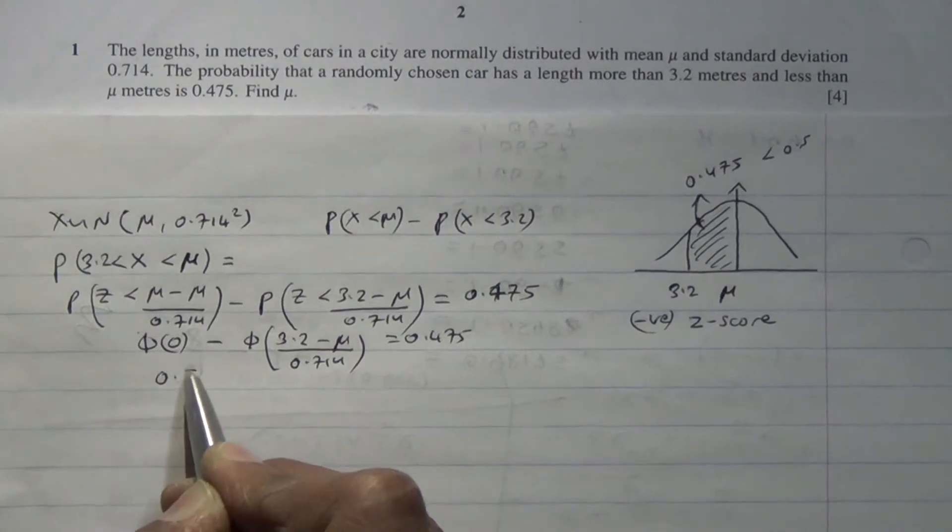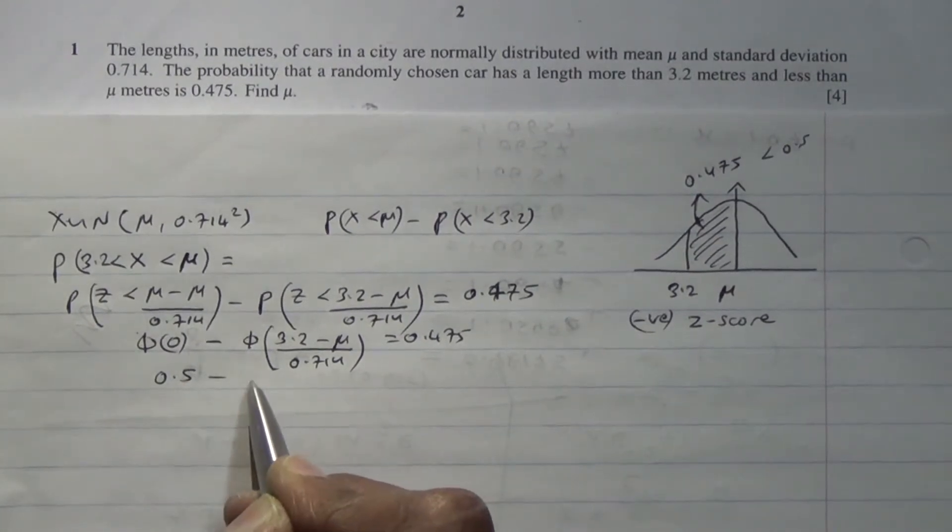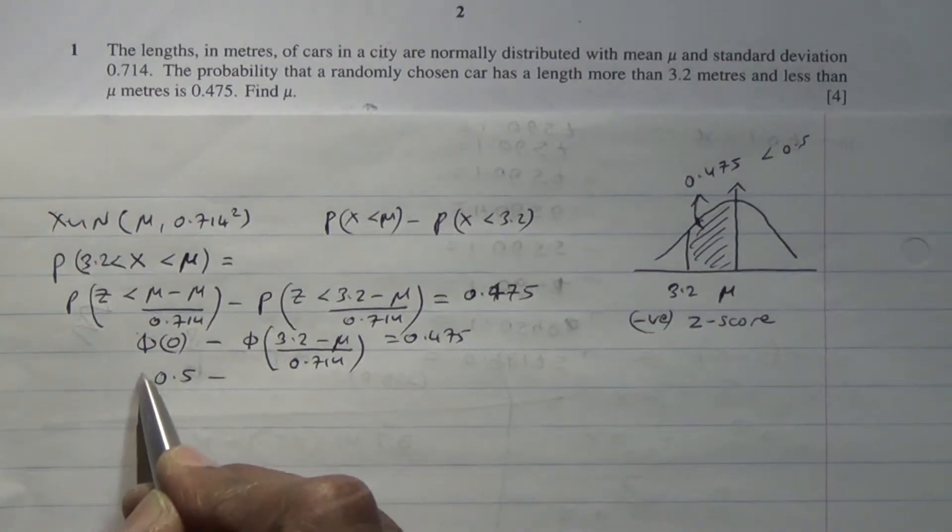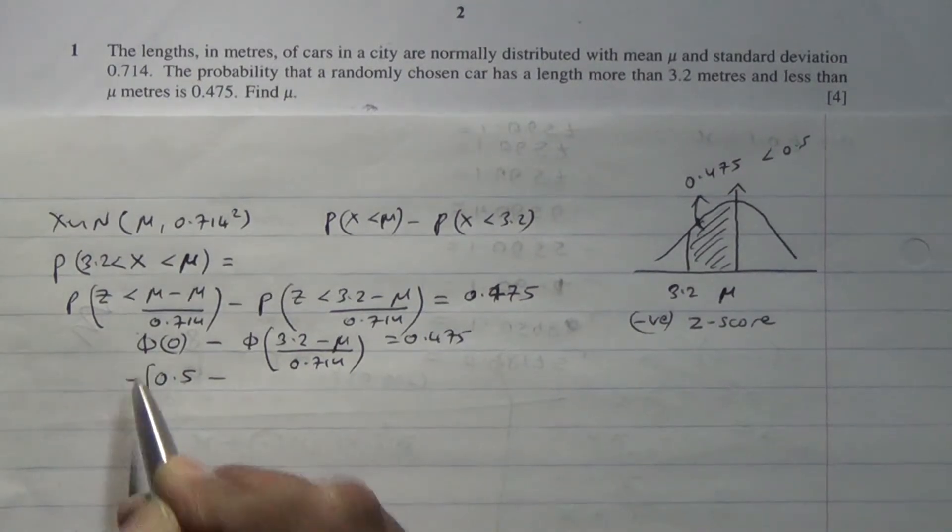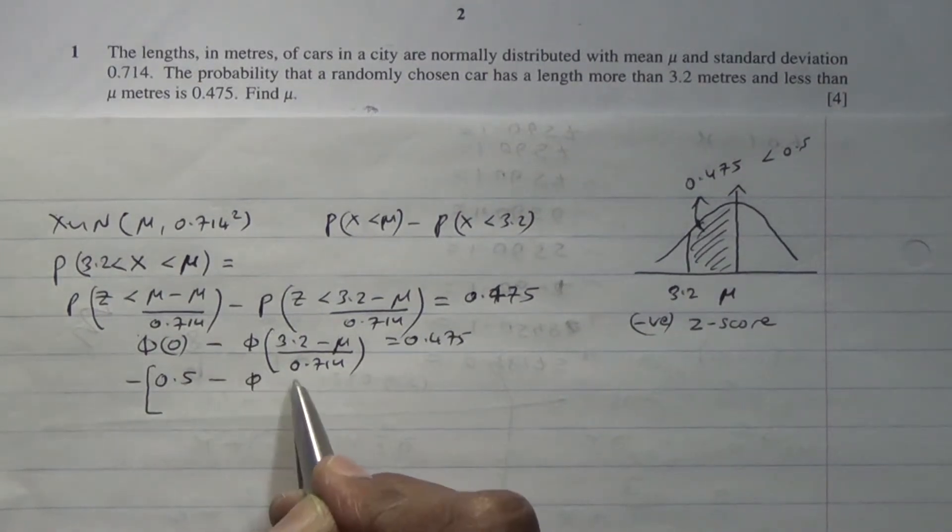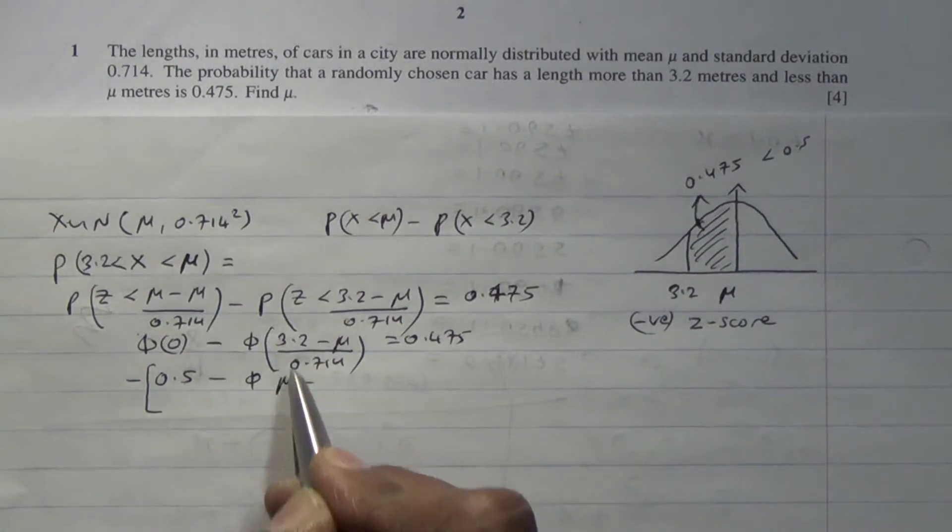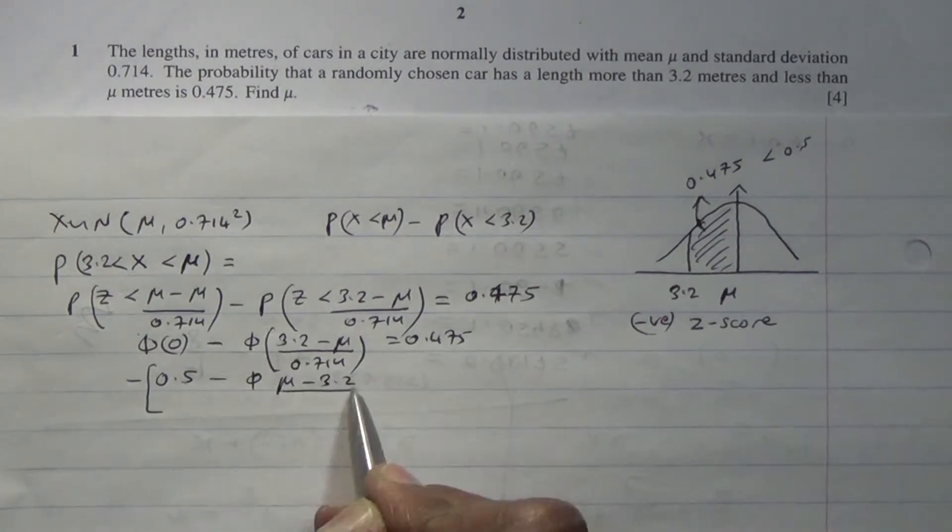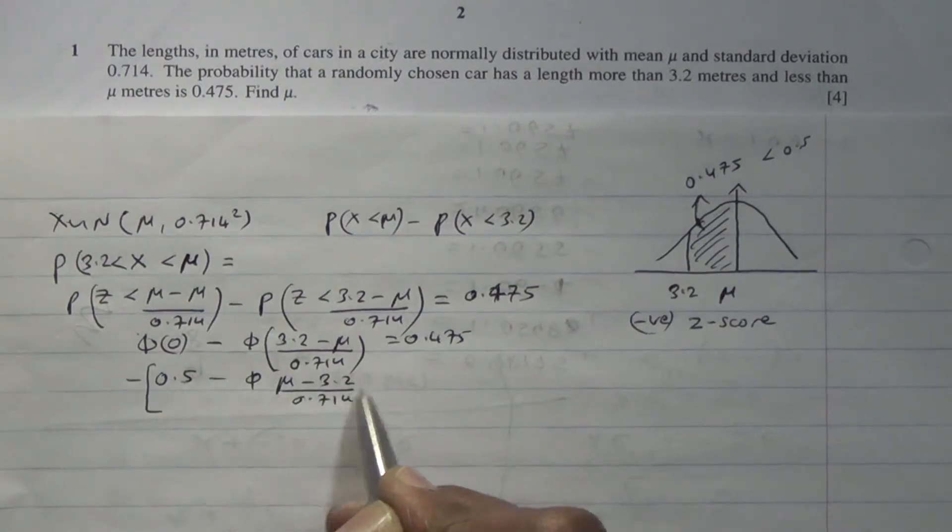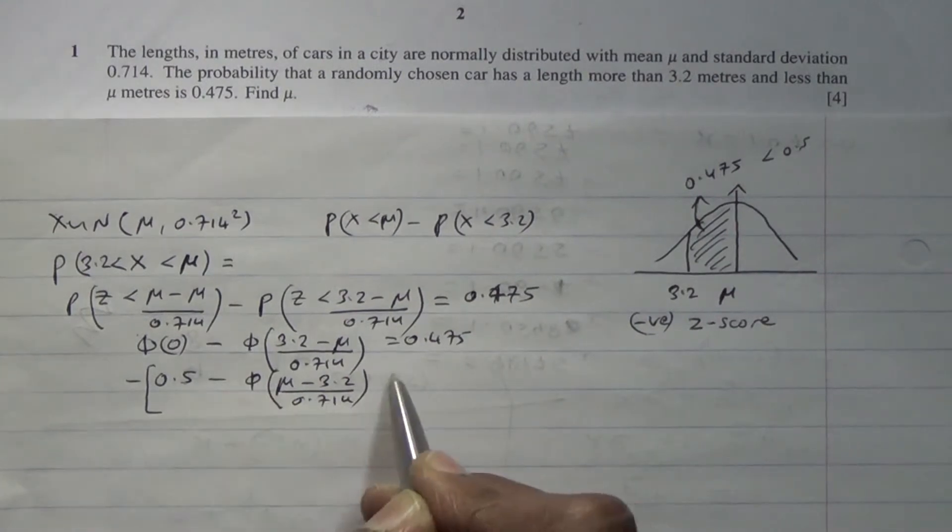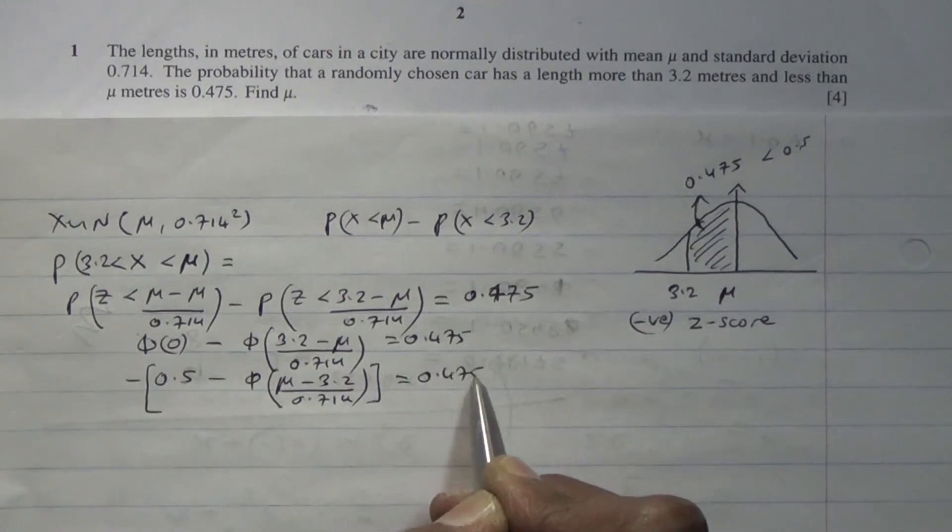This is 0.5 minus this left-hand side here. This is all negative, minus the phi of... Because this is negative, so this negative is going to become positive, mu minus 3.2. 3.2 is positive, becomes negative, divided by 0.714. And all of that is going to give us 0.475.